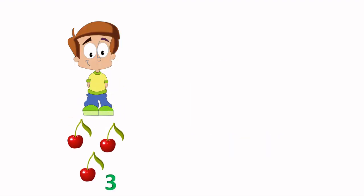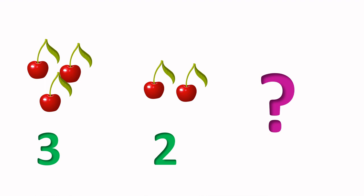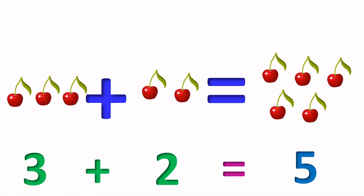My friend Ram gives 3 cherries. My friend Hita gives 2 cherries. How many cherries I have now? I have 3 cherries plus 2 cherries equals 5 cherries.